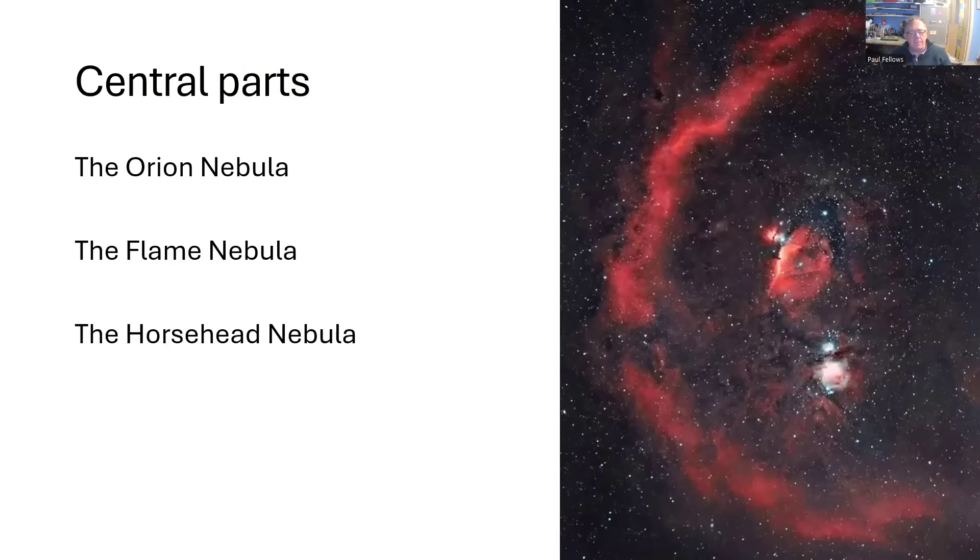So again, another picture of Barnard's loop and just some other objects in and around that area, right in the center there we have Orion Nebula looking fairly white and above it around the star at the left of the trio of Orion's belt. That's the star Alnitak. You have the glowing hydrogen with the flame nebula just to the slight right and slight left of Alnitak.